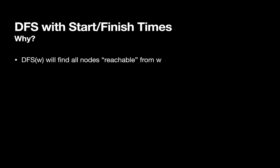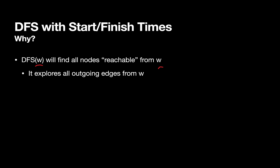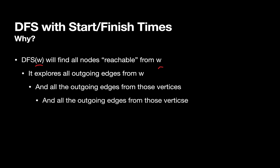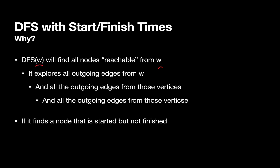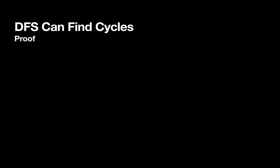Why are we interested in adding these start and finish times? They give us more information and let us detect things we couldn't detect without them. DFS will find all nodes reachable from a particular node — if we start DFS at node W, it finds everything we can possibly get to from W, exploring all outgoing edges and recursing on each. Another interesting side effect: if DFS finds a node that's been started but not yet finished, that means there was a loop back to the node.